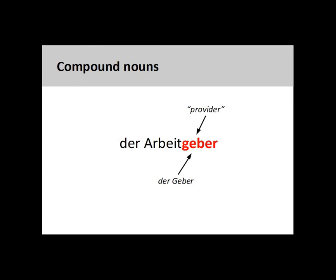Here you will note an important rule governing compound nouns: the final noun in the chain will determine the gender of the compound noun. By putting these two nouns together, meaning work and provider, we can come up with the definition of the noun, which is employer.